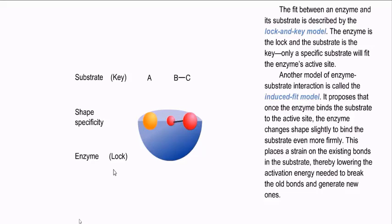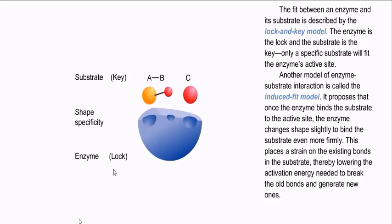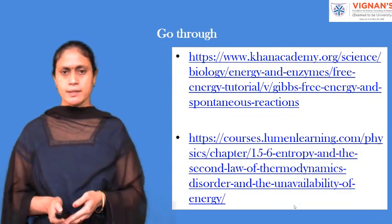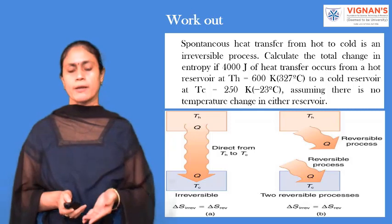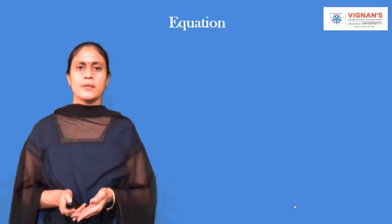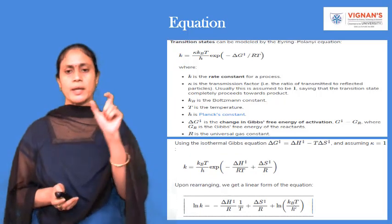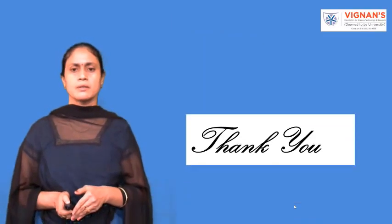Another model of enzyme-substrate interaction is called the induced fit model. It proposes that once the enzyme binds the substrate to the active site, the enzyme changes shape slightly to bind the substrate even more firmly. This places a strain on the existing bonds in the substrate, thereby lowering the activation energy needed to break the old bonds and generate new ones. Go through these links to gain more knowledge about these topics, and I have given you some questions to work upon. You can also see how this equation has been derived — it gives the relation between the rate constant as well as entropy with respect to temperature. Thank you.